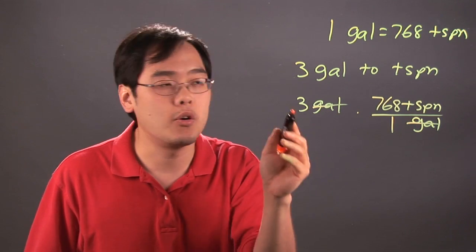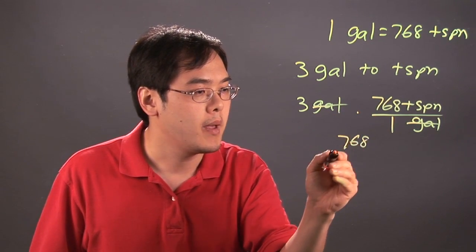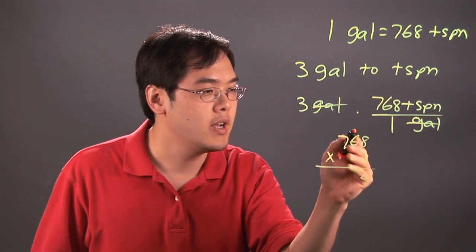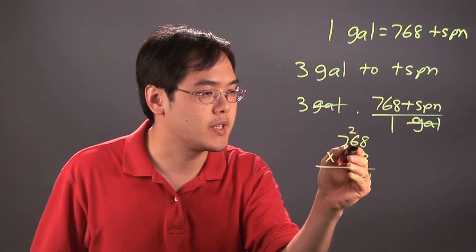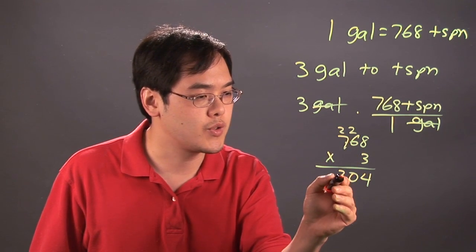And then you can use a calculator or multiply by hand. So you're multiplying 768 times 3, and you're going from there. So 3 times 8 is 24. You've got the 2 up here. 3 times 6 is 18, plus the 2 is 20. 3 times 7 is 21, and the 2 is 23.